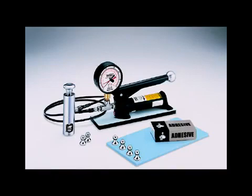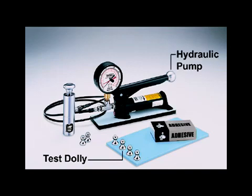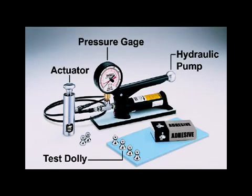The major components of a pull-off adhesion tester are a test dolly that is adhered to the coating, a pressure source such as a hydraulic pump, a pressure gauge with a drag pointer, and an actuator for physically separating the dolly and coating from the substrate.